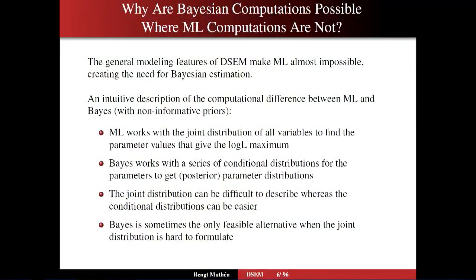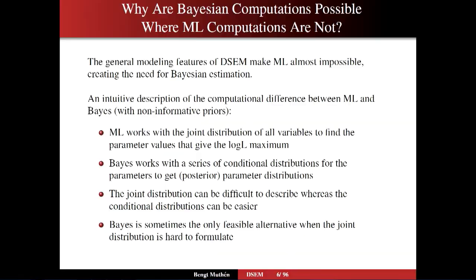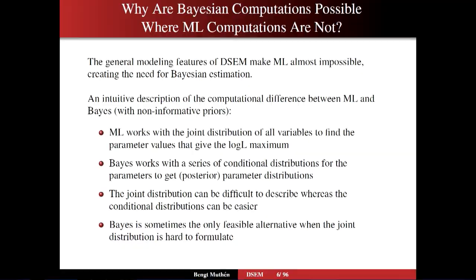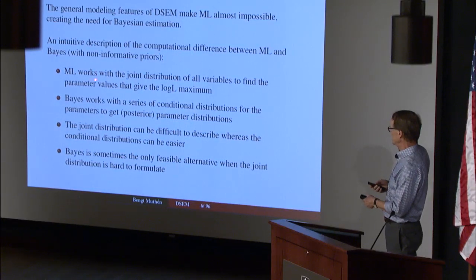So there you have it. Why are the Bayesian computations possible when ML computations are not? ML works with the joint distribution of all variables to find parameter values that give the likelihood maximum. Bayes doesn't need to consider that — it considers a series of conditional distributions, not for the variables, but for the unknowns: that is, for the parameters. Breaking it down into a series of conditional distributions is computationally much easier than the ML description of the joint distribution of all variables.